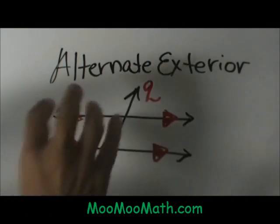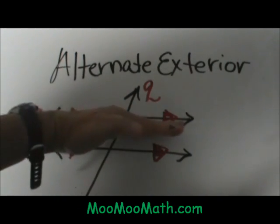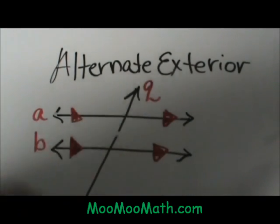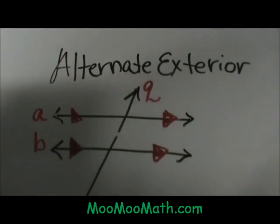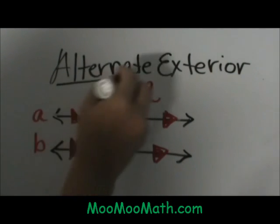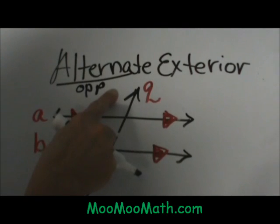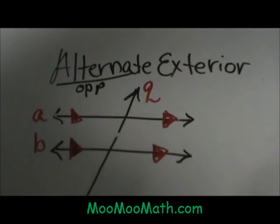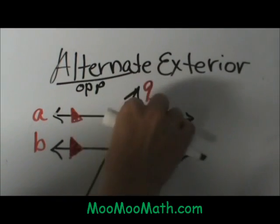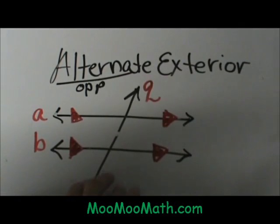In relation to these two lines, I always like to think of this as a hamburger where your meat is between the two lines, and then you have the top and the bottom — what I think of as the buns. The buns are where the alternate exterior angles are going to lie. Alternate means on opposite sides — on one side of the transversal and the opposite side. Then we've also got exterior angles, meaning not between the two buns but on the outside, on the top and on the bottom.